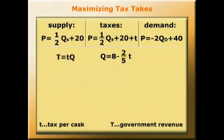So capital T = little t × Q. In this case, capital T = t(8 - 2/5 t). So if we multiply out the brackets, that gives us 8t - 2/5 t².